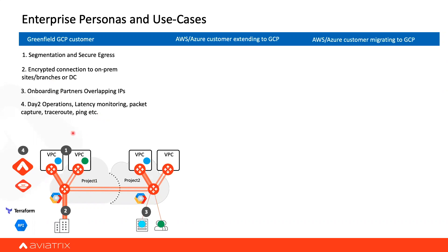Encryption is also very important — how do you make sure that when connecting to the on-prem data center, the traffic is encrypted? And what about overlapping IP? If you're bringing more partners into the cloud, you can't control what IPs they bring in — or there may be an acquisition or merger use case. This is what we typically see from greenfield GCP customers.